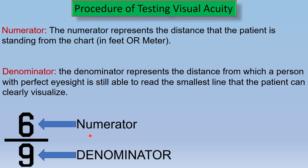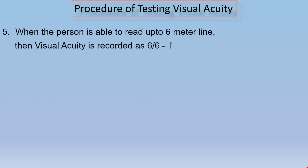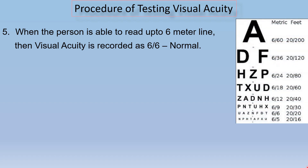Step number 5: When the person is able to read up to the 6 meter line, then visual acuity is recorded as 6/6 normal. This means the person can read up to the 6 meter line and it is considered normal vision.